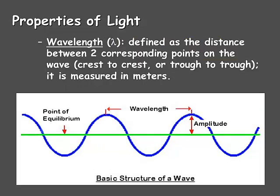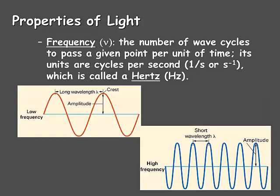Wavelength is another important property of light, represented with the Greek letter lambda — remember that, because you'll see it in formulas. It's defined as the distance between two corresponding points on the wave. Most often, this gets measured from crest to crest, or from trough to trough, and it's measured in meters as its standard unit.